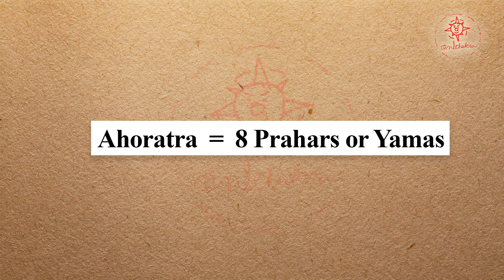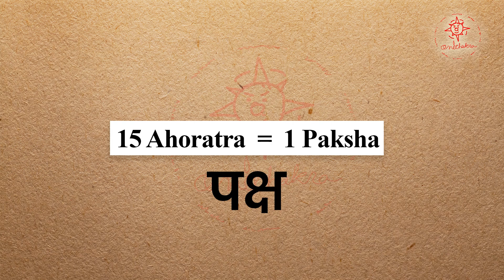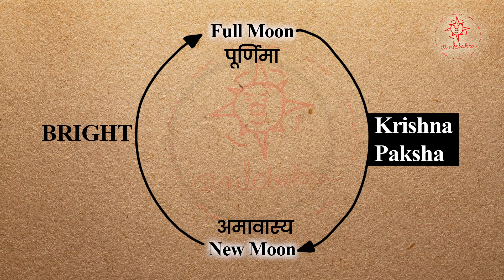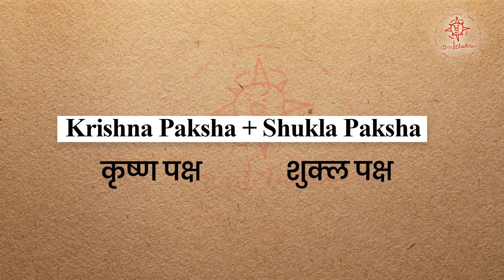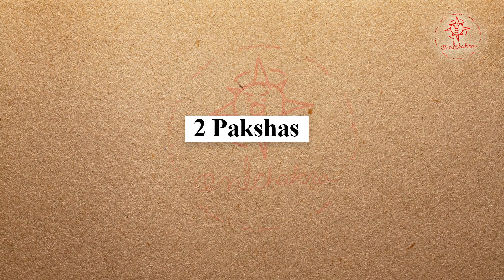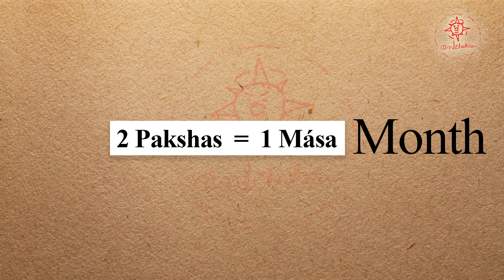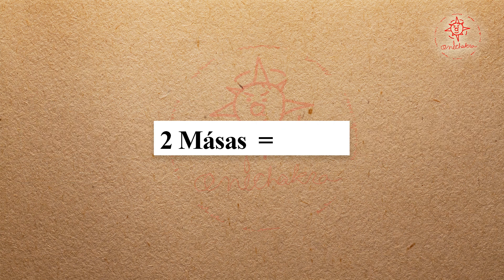The day and night of human beings consist of four Yamas or quarters. Each Ahoratra is equal to eight Prahars. Fifteen Ahoratra constitute a Paksha or fortnight, which is alternately bright and dark — in the Indian context called Krishna Paksha and Shukla Paksha. Both Pakshas taken together make one Masa or month, which is equal to an Ahoratra of the Pitras.